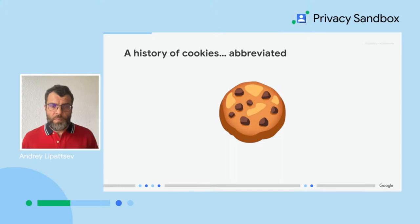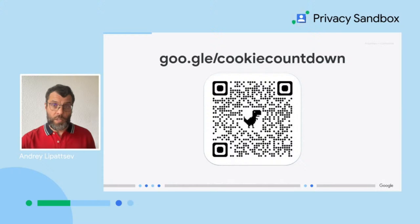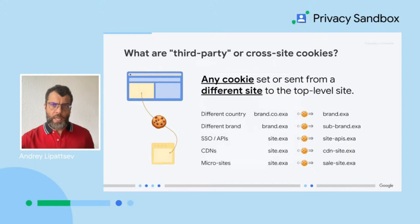Cue Chrome's Privacy Sandbox — the initiative that entails the deprecation of third-party or cross-site cookies in Chrome. Everything we talk about today is covered in more detail at goo.gl/cookie-countdown, so make sure to check that out once we're done here to get access to all the reference materials and tooling. First off, a reminder of what we mean by third-party cookies: they are simply cookies set or sent by a different site. It doesn't matter who that site belongs to — if it's a different site, it's third-party for our purposes today, and it's these cross-site cookies that Chrome is deprecating.